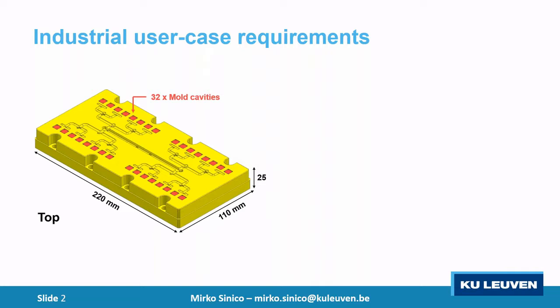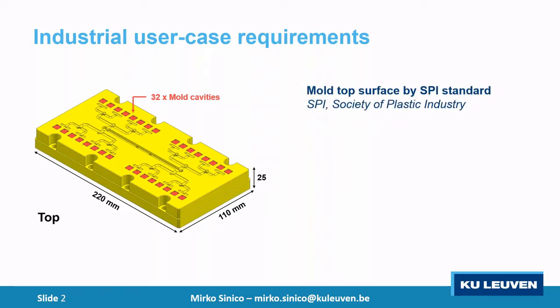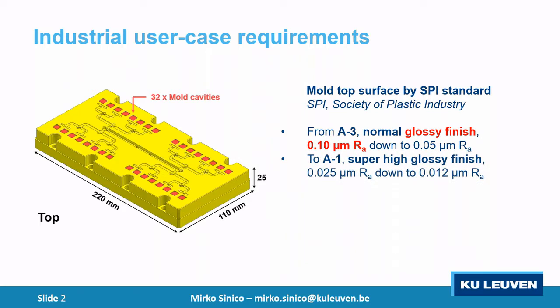Today we want to talk about the industrial user case requirements — specifically about the top surface and cavities. By the SPI standard, the Society of Plastics Industry, you need to achieve very tight tolerances on surface quality of mold inserts for injection molding. You start from a normal glossy finish at maximum 0.1 microns Ra, and you can go to a super high glossy finish down to 0.012 microns Ra.